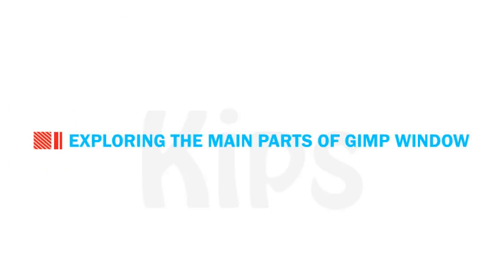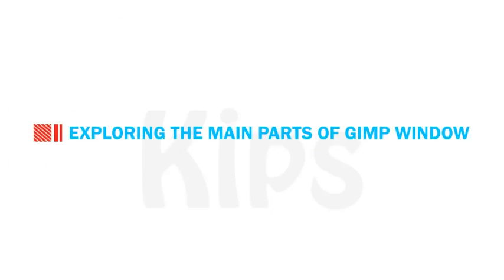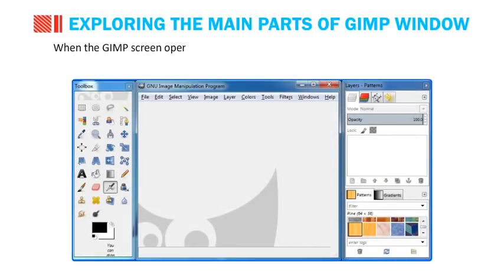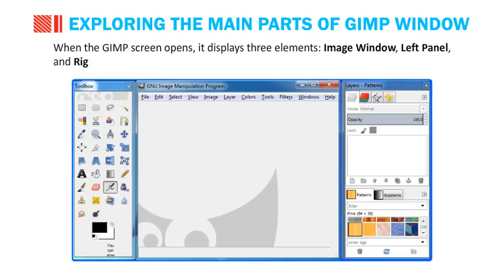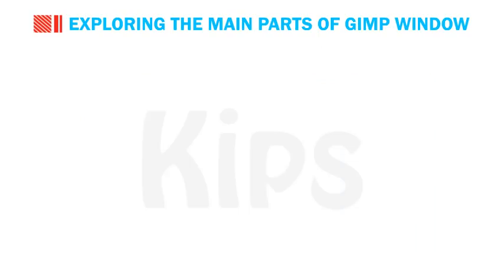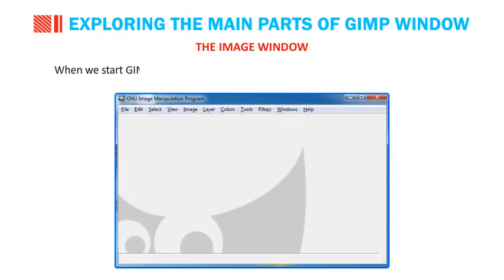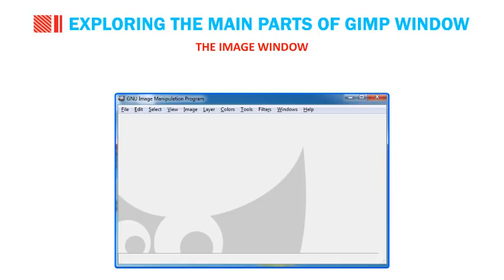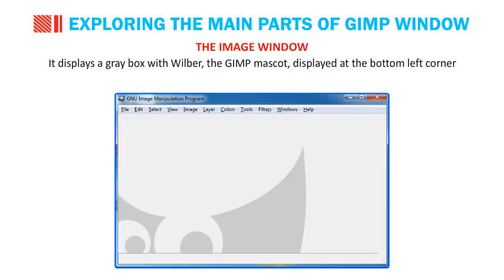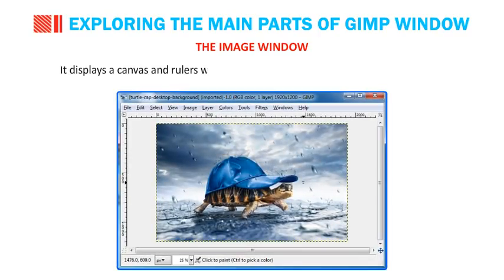When the GIMP screen opens, it displays three elements: Image Window, Left Panel and Right Panel. When we start GIMP, an empty image window appears. It displays a grey box with Wilber, the GIMP mascot, at the bottom left corner and the menu bar at the top. It displays a canvas and rulers when a new or already existing image file is opened.